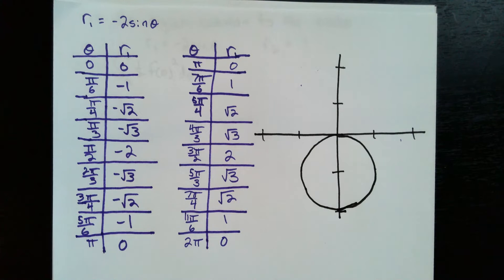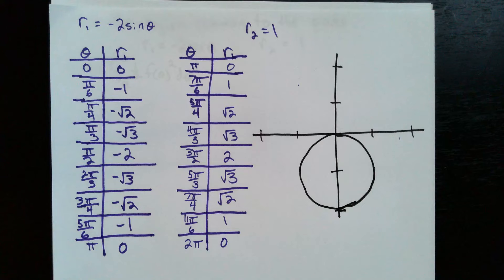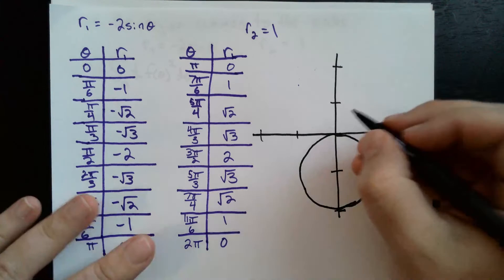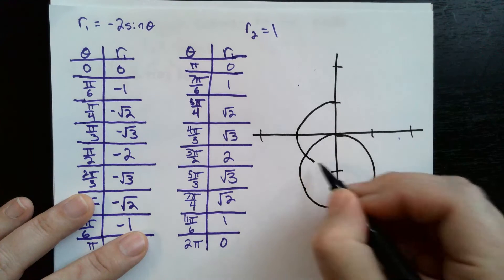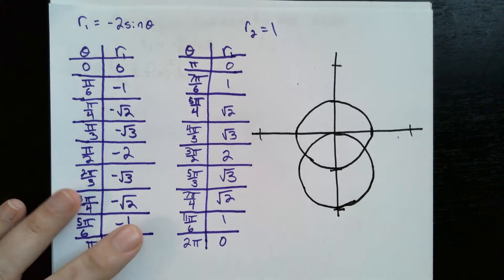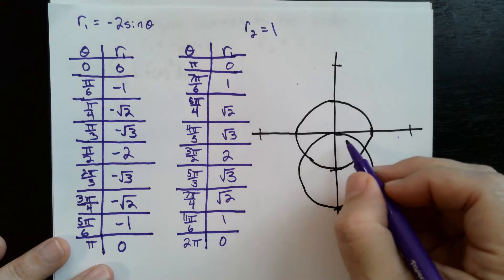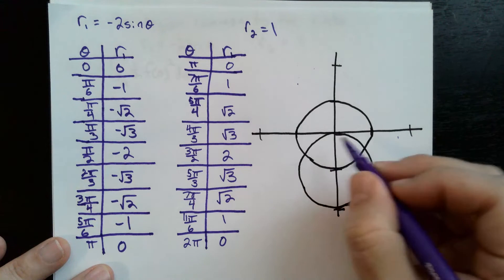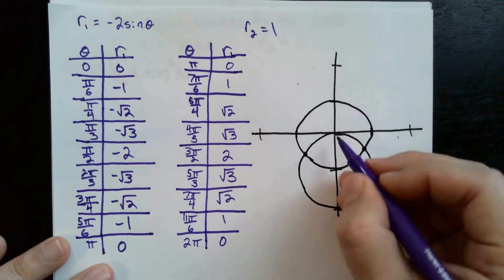For r2, r2 is equal to 1, which is a circle centered at the origin with radius 1. We're trying to find the area that is common to both of these circles — the area inside both — so we need to find their intersection points.